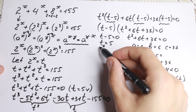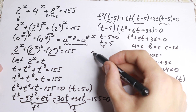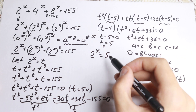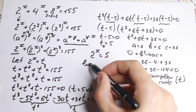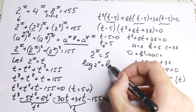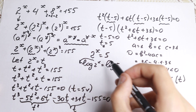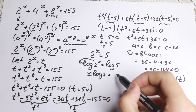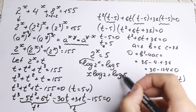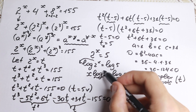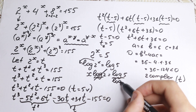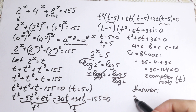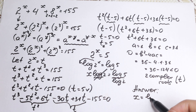So focusing on the real number root: t equals 5, and since t equals 2 to the x, we have 2 to the x equals 5. Taking the log of both sides: log(2^x) equals log 5, and using the log power rule, x times log 2 equals log 5. Dividing both sides by log 2, our answer is x equals log 5 over log 2.